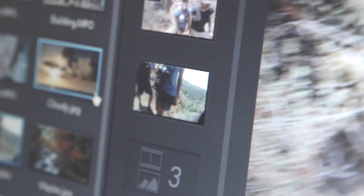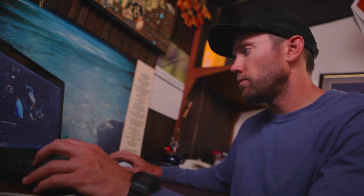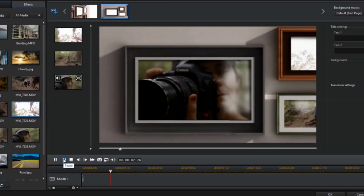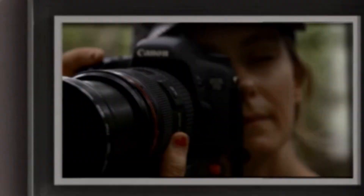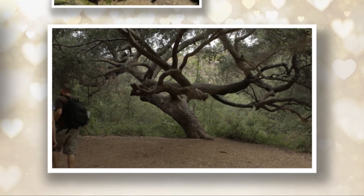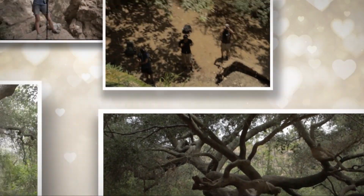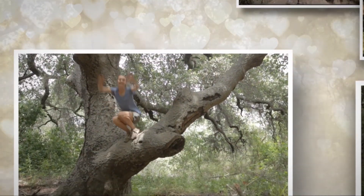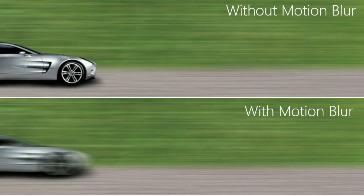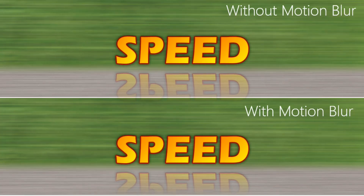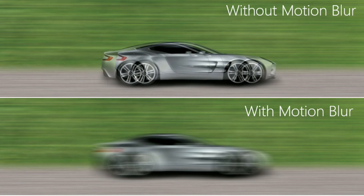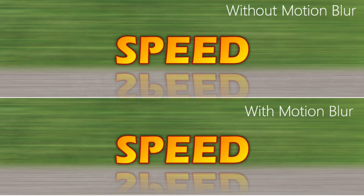New Theme Designer allows you to turn your videos and photos into amazing 3D animated video slideshows. With the Motion Blur feature, you can give your moving PIP objects and text objects authentic motion.